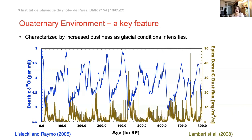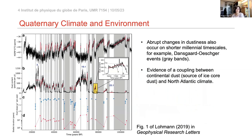The Quaternary environment also has key features. One is that it was quite dusty, and there was increased dustiness as glacial conditions intensified. Here again is the same oxygen isotope stack of LR04 for the last 800,000 years, and the other record is the dust content from EPICA Dome C ice cores from Antarctica. We can notice large amounts of dust content at peak glacial periods.